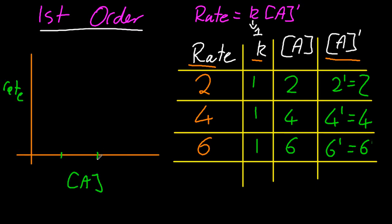So let's plot the same graph of rate against concentration of A. And this gives me a distinctive first order graph. 2, 2, 4, 4, 6, 6. So it's a line through the origin. That's a classic first order graph.